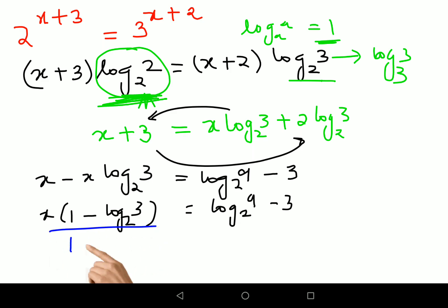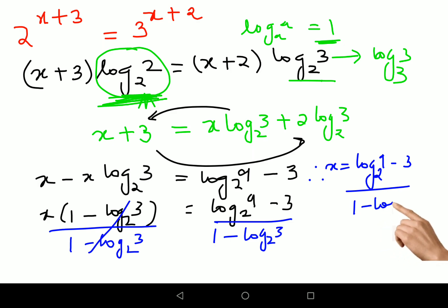Obviously in order to find the value of x, we are going to divide both sides by 1 minus log 3 to the base 2. This gets cancelled, so therefore I can say x value is log of 9 to the base 2 minus 3 upon 1 minus log of 3 to the base 2.